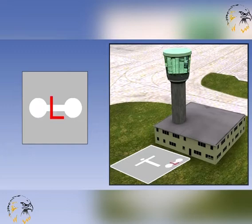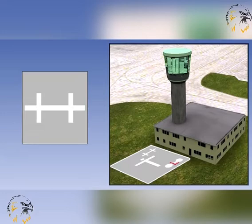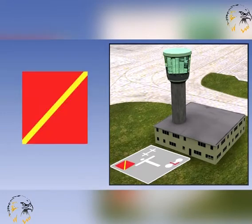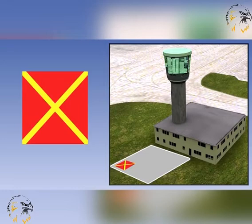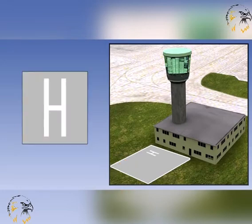A red letter L displayed on the dumbbell signifies that light aircraft are permitted to take off and land either on a runway or on the area on the aerodrome designated by a large white letter L. A white double cross signifies that glider flying is in progress. A red panel square with a yellow diagonal stripe signifies that the state of the manoeuvring area is poor and pilots must exercise special care when landing. A red panel square with yellow stripes along each diagonal signifies that landing is prohibited and most likely will continue to be so for some time. A white letter H signifies that helicopters shall take off and land within the area designated by a large white letter H.